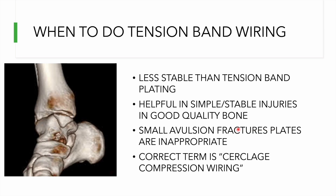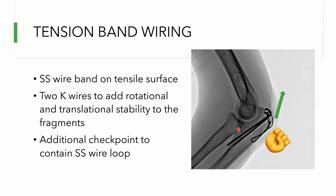Tension band wiring is used when fracture fragments are small or fractures are simple, in healthy bones, and when plate fixation is not required due to implant prominence or the short profile of the bone. In tension band wiring, we use an SS wire that provides a band on the tensile surface, and two K-wires close to the articular surface that provide additional rotational and translational stability and serve as checkpoints for containment of the wire loop.